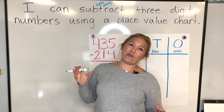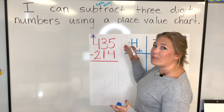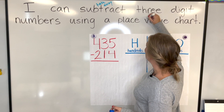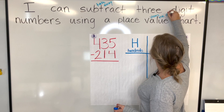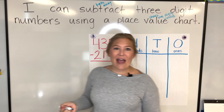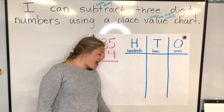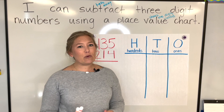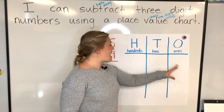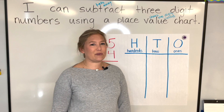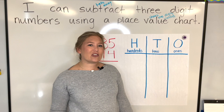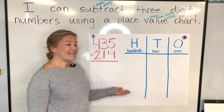Our first example today says 435 minus 214. Last week and the week before, we were practicing using a place value chart with addition. When we did addition, we put both numbers in our place value chart and counted everything up to find our answer. It's going to be a little different with subtraction — and some might say even just a little bit easier. With subtraction, we are only going to put that top number, or the bigger number, in our place value chart. So which number are we going to put in our chart? That's right — we're going to put 435.